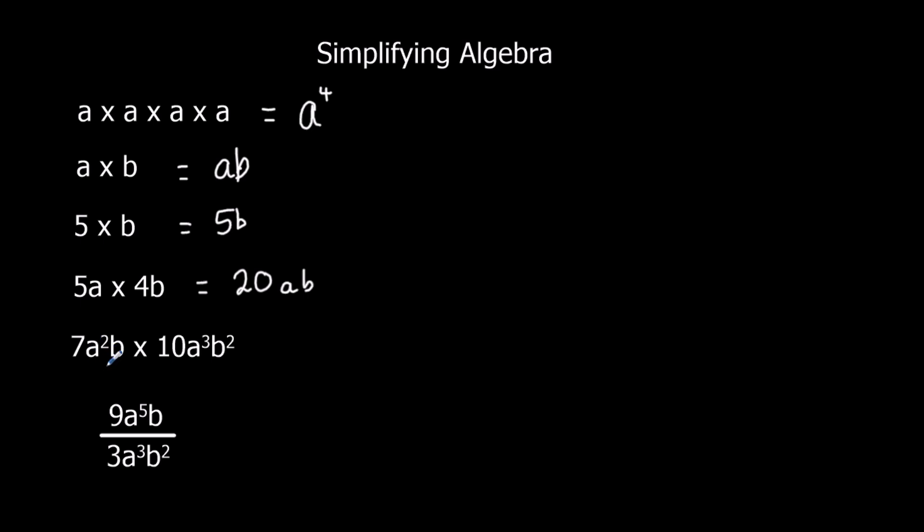So here we've got a lot more terms, a lot more parts to it, but it's the same thing. So the two numbers we can times together. 7 times 10 is 70.